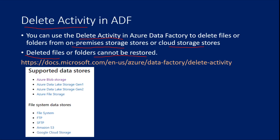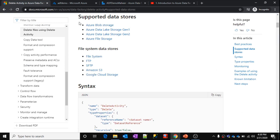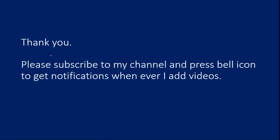Going back to the pipeline — for the delete activity, under Logging Settings, we defined the path, which is why the log file got created. Whenever you watch this video, I recommend opening the Microsoft documentation link which lists all the supported data stores and file systems for this delete activity. At this moment, all these data stores and file systems are supported. By the time you watch this video, there may be new connectors and storage types added, so it is good to check the documentation. Hope I have covered everything. Please subscribe to my channel and click the bell icon to get notifications whenever I add videos. Thank you so much.